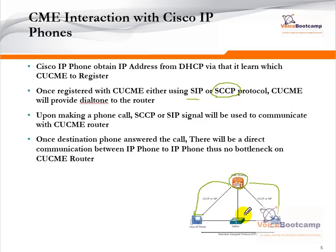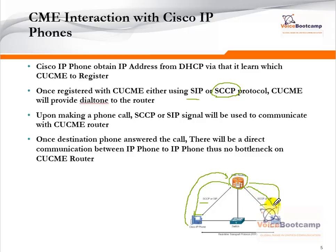The protocol used could be either SIP or Skinny. Once the phones are registered, you can dial from your phone. The call signal will come into the router, and if a number is matched, it will send the signal to the destination phone. Once the destination phone answers the call, there will be direct communication between the source phone and the destination phone.